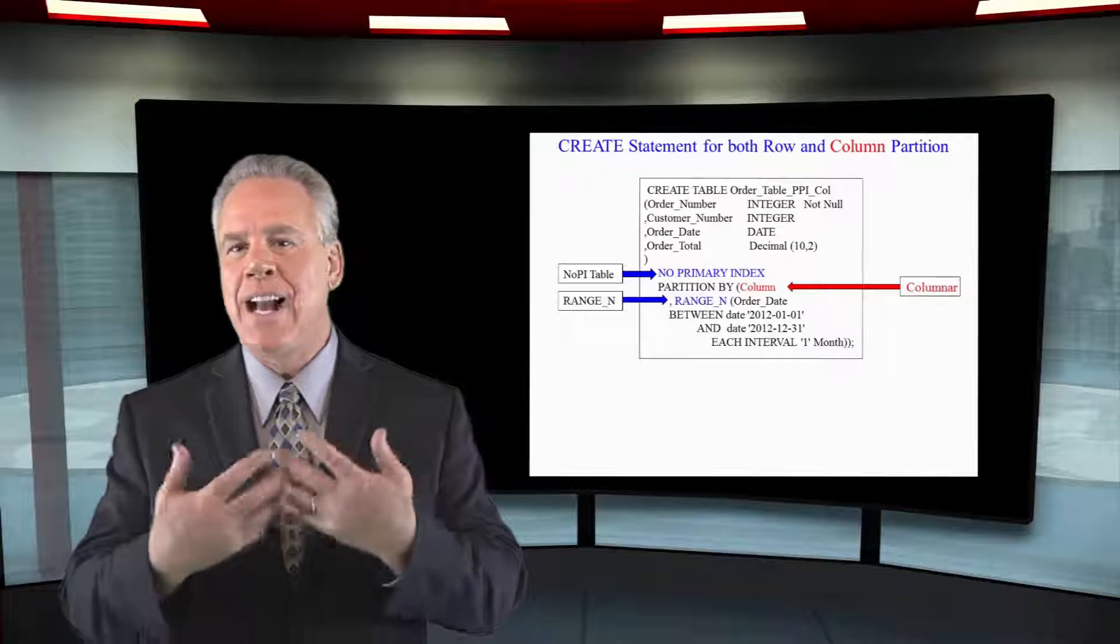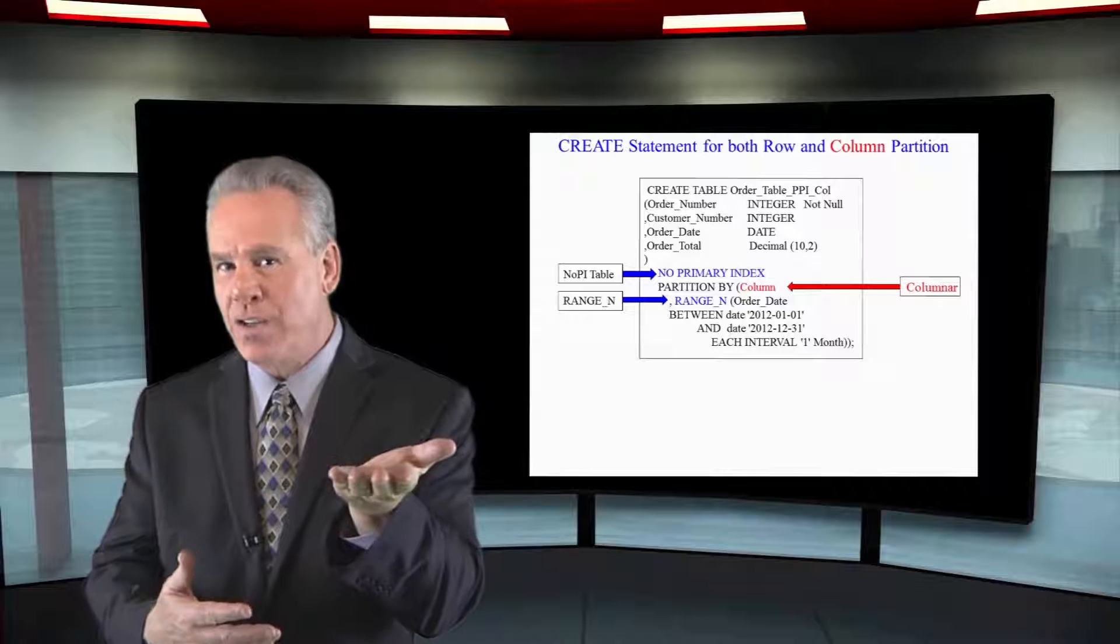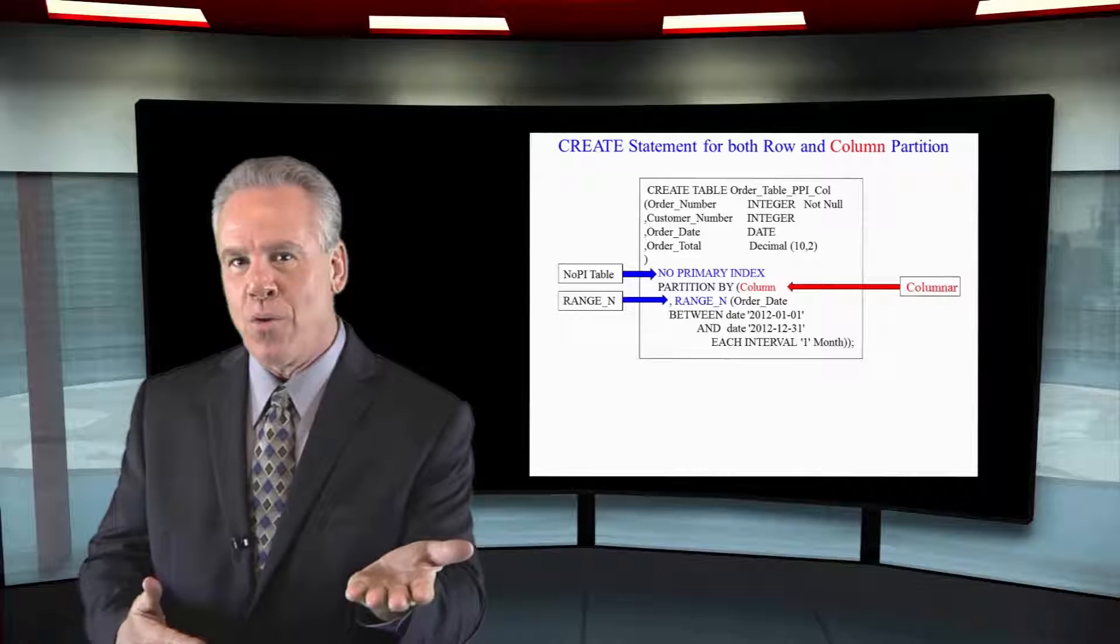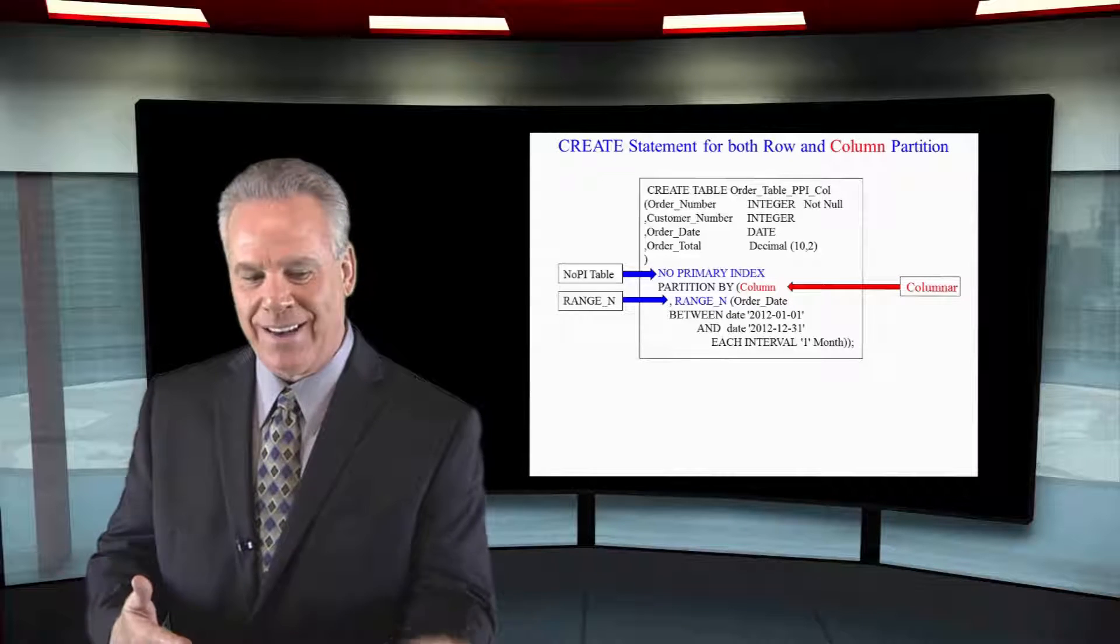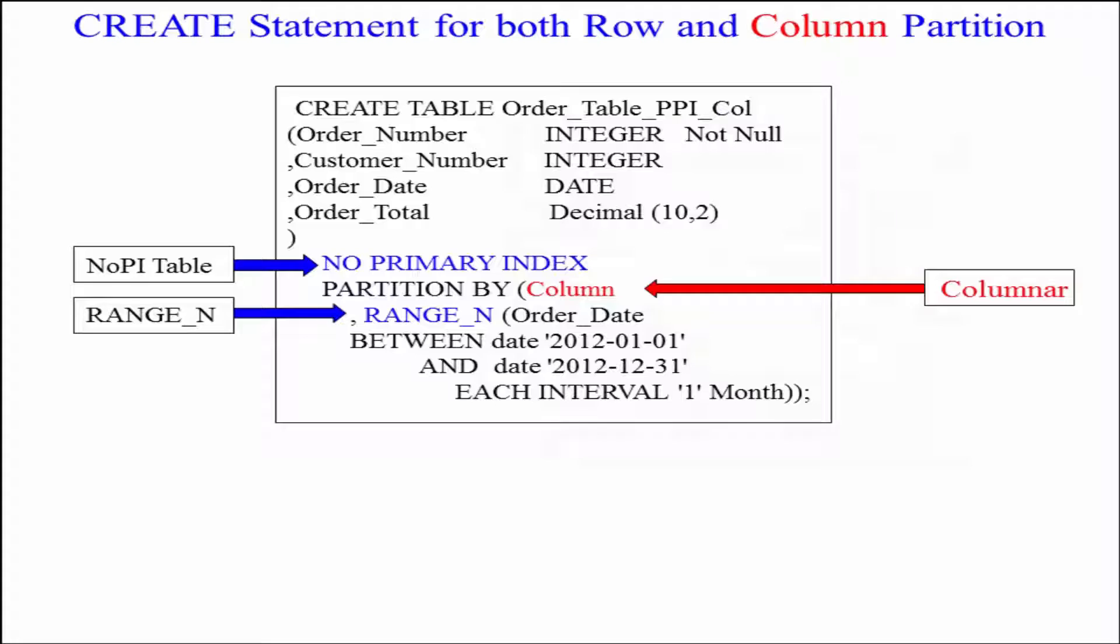Here we're going to create a columnar table with each column also being further partitioned by the order dates month. So the way we do that is we say create table, table name, open paren, we've got order number, we've got customer number, we've got the order date and the order total, four columns.